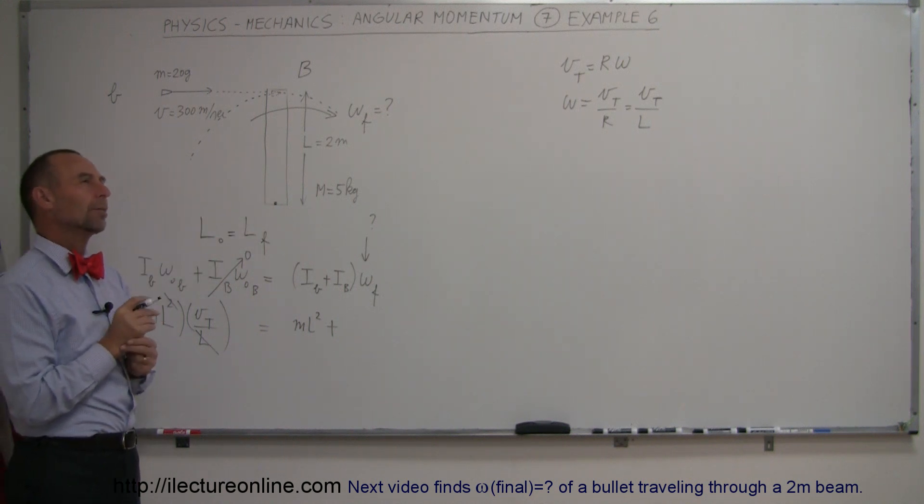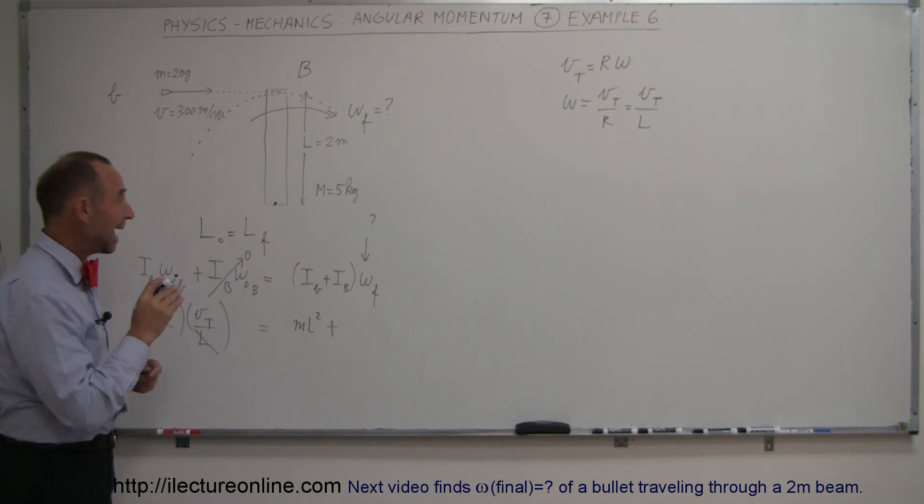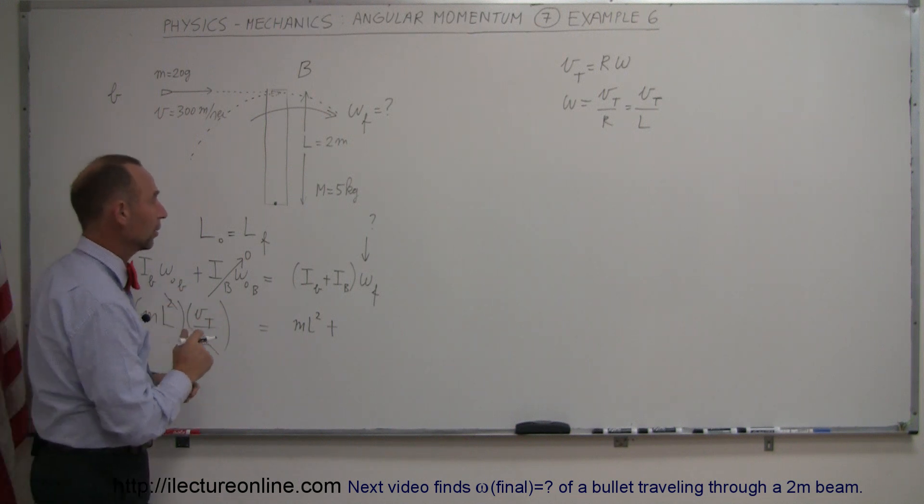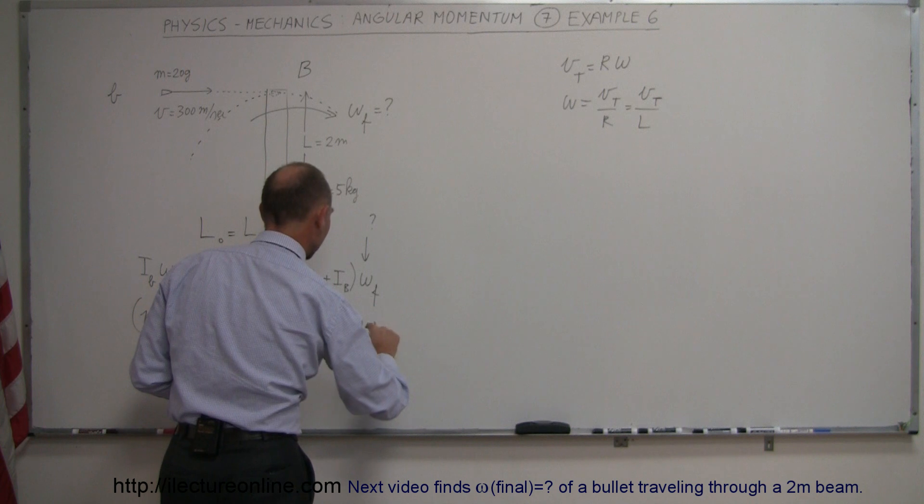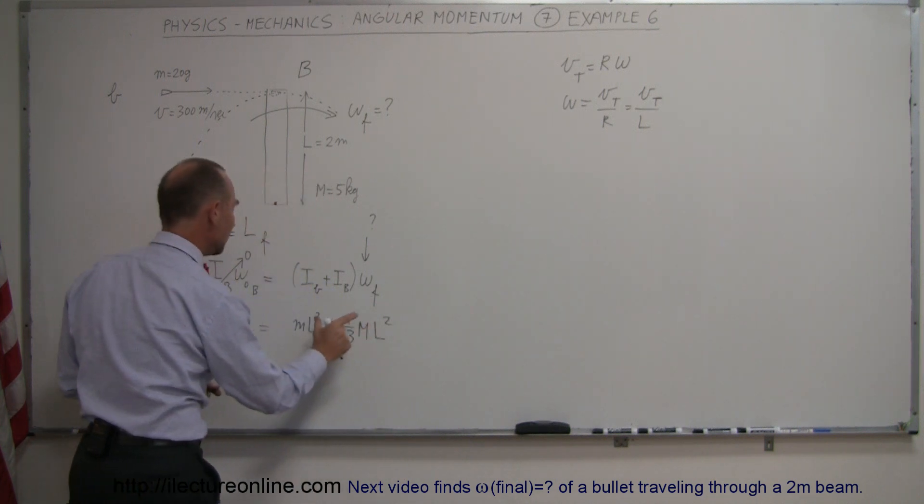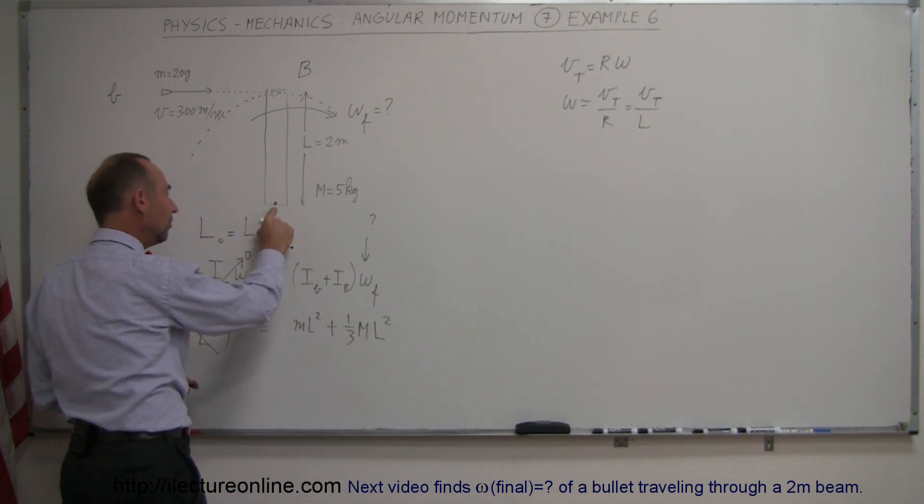The moment of inertia of a beam rotating about its end would be one-third ML squared. So it would be one-third the mass of the beam times the length of the beam squared. That's the moment of inertia of the beam rotating about the end.